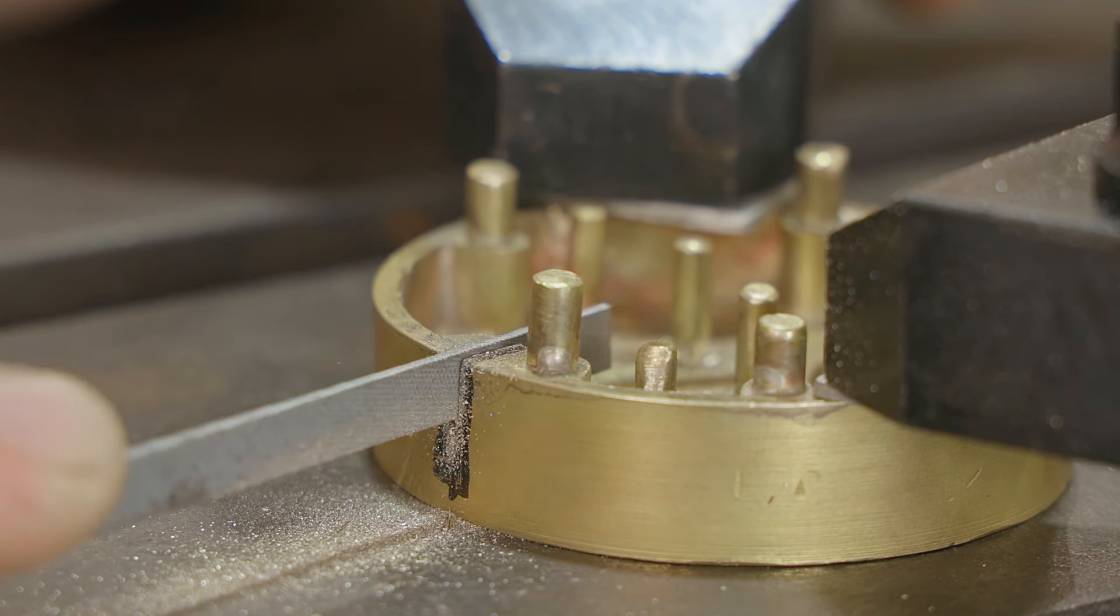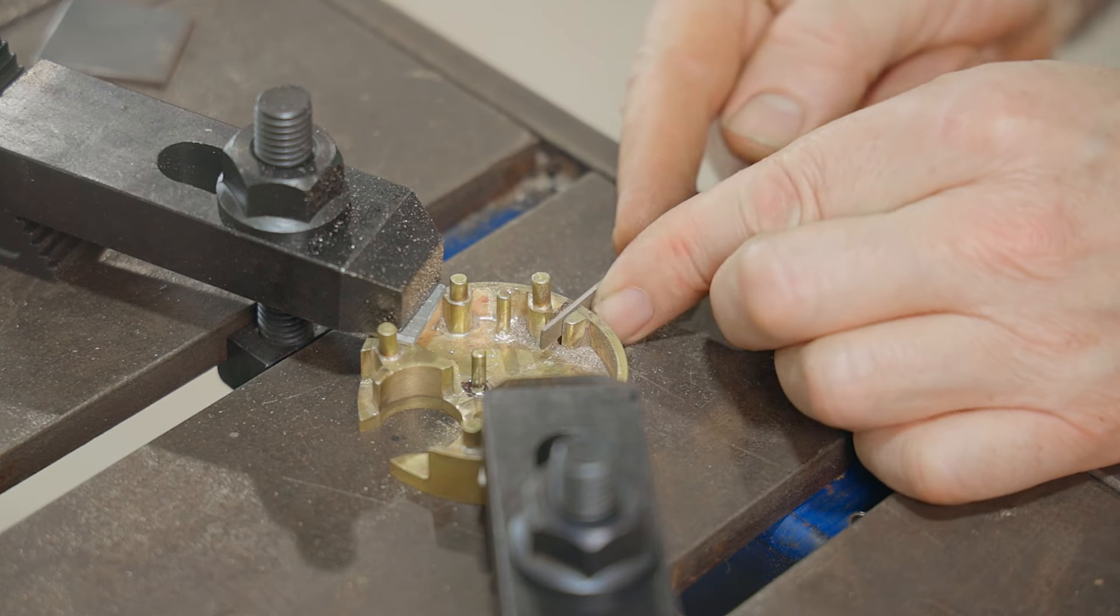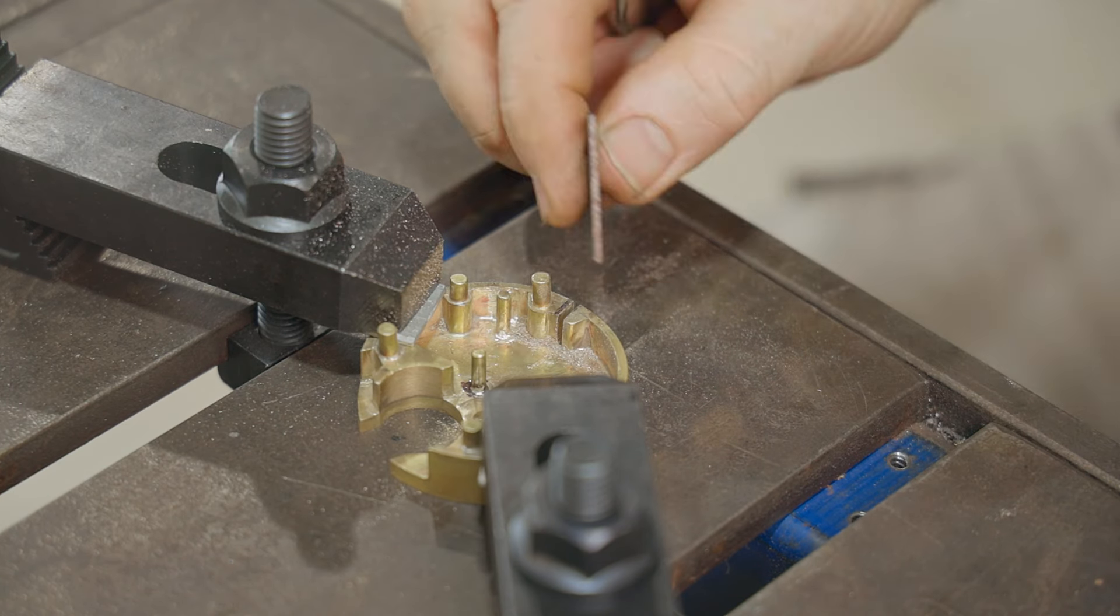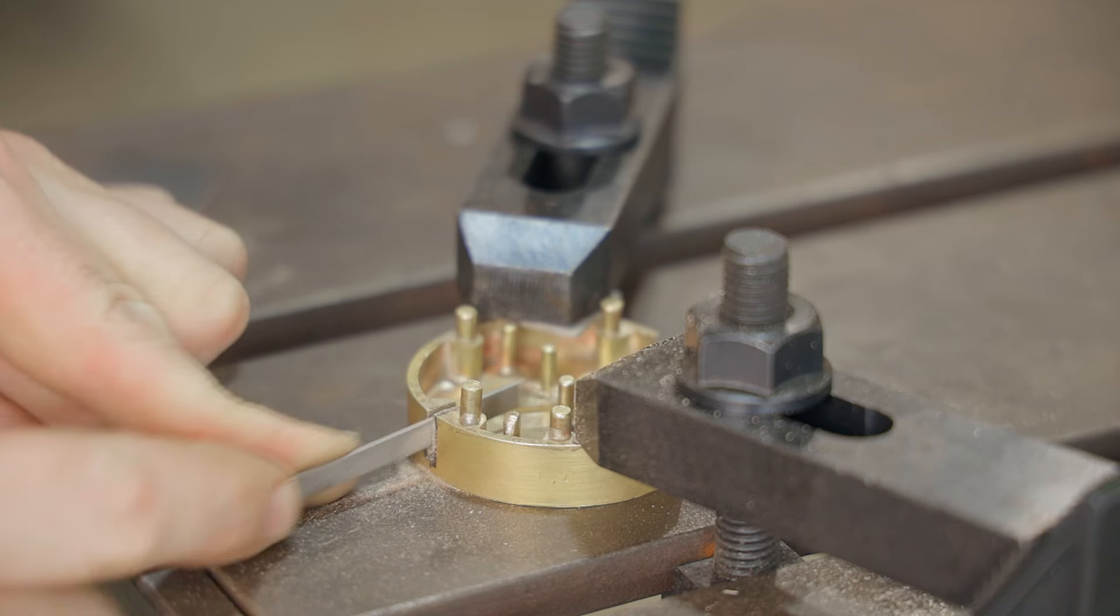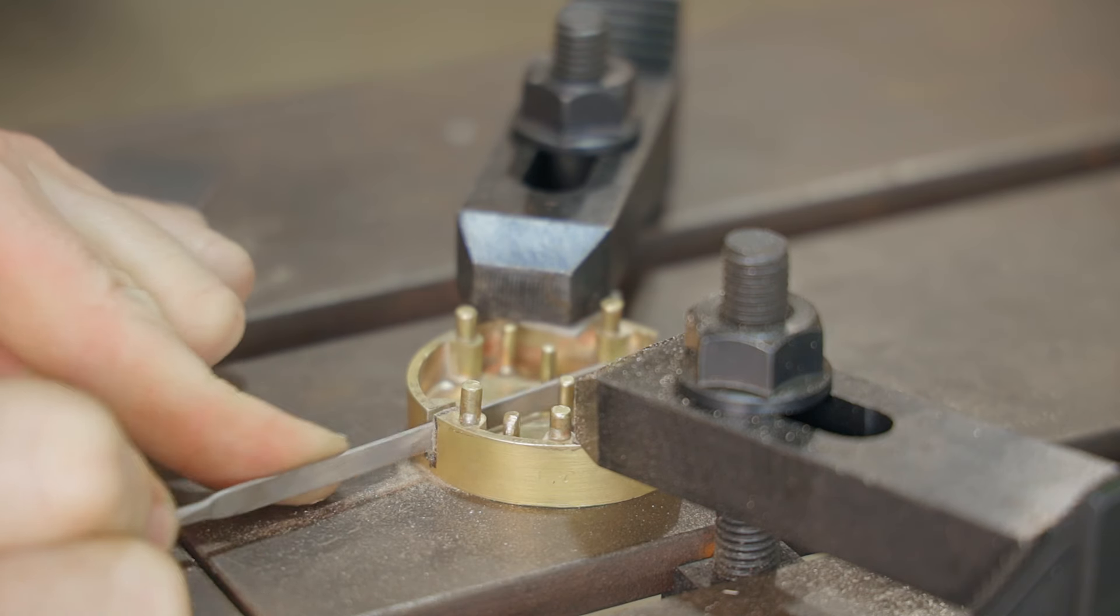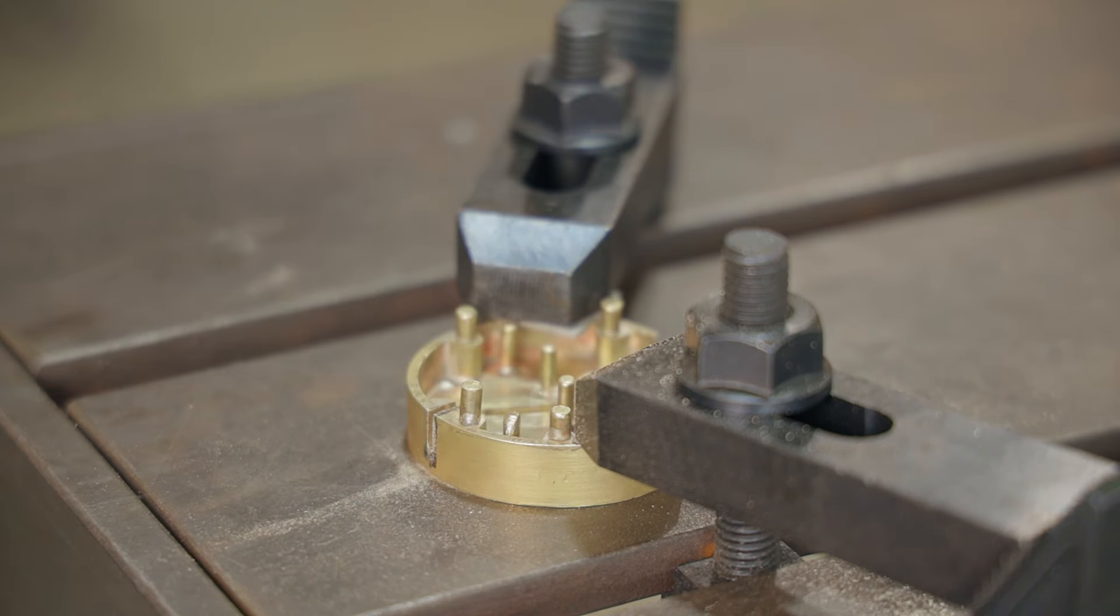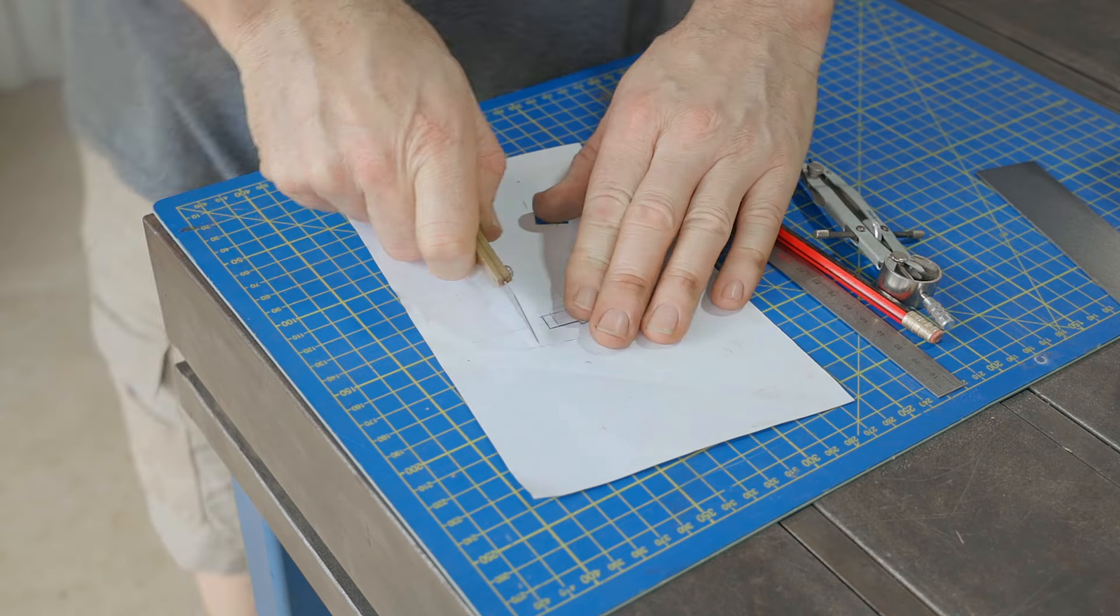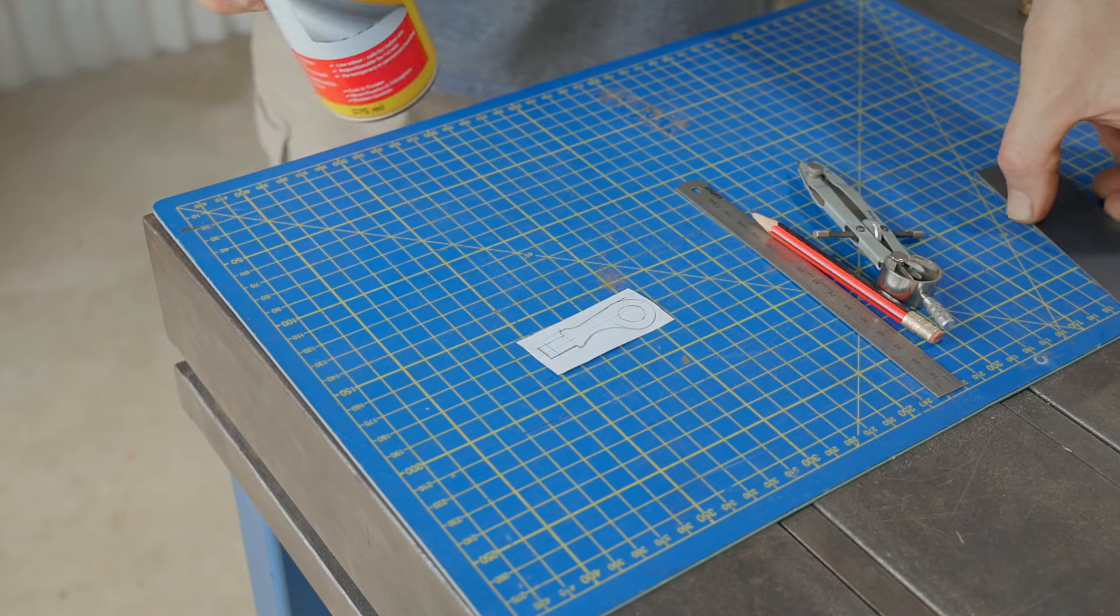I'll be using a piece of 1.6 millimeter mild steel for the key so I'm using a scrap of that to test the width of the slot. I made a quick sketch of the key and I'll glue that to a piece of steel and start to shape it.